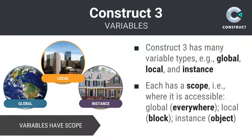So-called global variables are accessible everywhere — they have a global scope. Local variables can only be accessed within the block in which they are defined; they have a limited, local scope. And an instance variable stores information relevant to an individual object you place in your game — it has a limited, object-level scope.